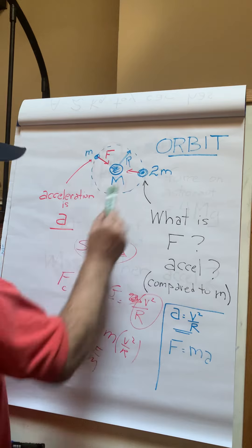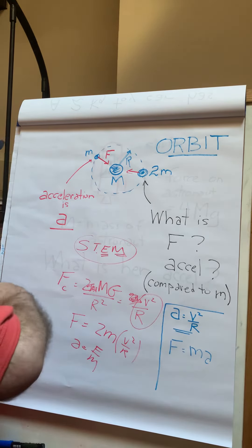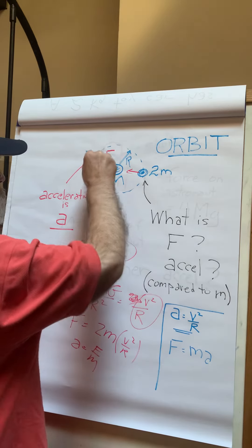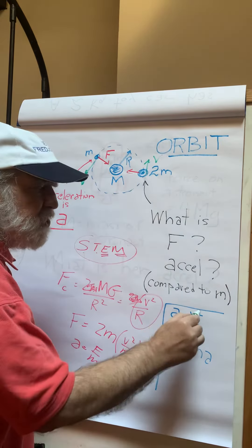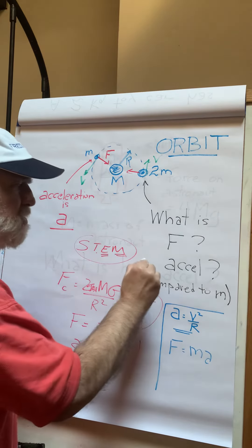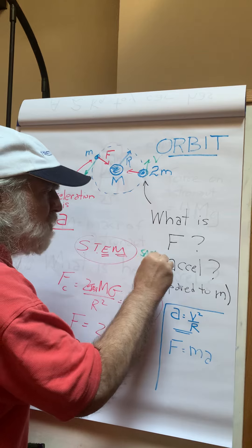these two masses have an acceleration of v squared over r, and their velocities are the same. So their acceleration is v squared over r, their acceleration will be the same, but the forces will be